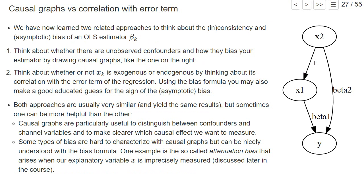Both approaches are very similar, and thinking either the first or the second approach should basically give you the same result. So if you think you have a bias by drawing a graph and thinking about confounders, you should also come to the same conclusion if you just look at what is part of the error term in the regression you want to estimate and whether it's correlated with your variable of interest. You should basically get the same result about whether there's a bias or not.